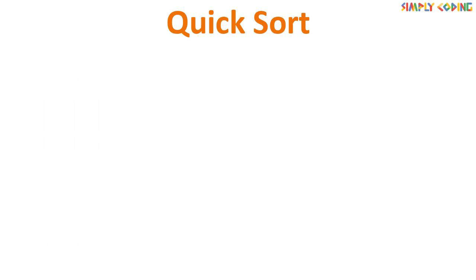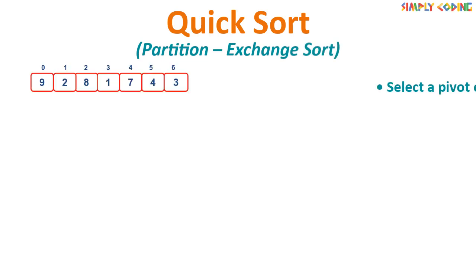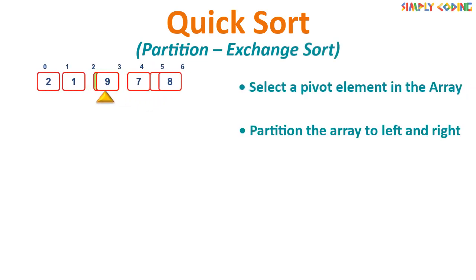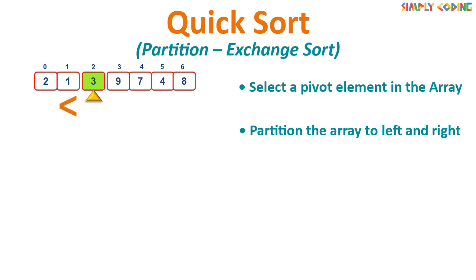Quicksort is also called partition exchange sort. It works by selecting a pivot element from the array. It partitions the array by placing the pivot in its sorted position and moving all numbers smaller than the pivot to the left and larger numbers to the right.